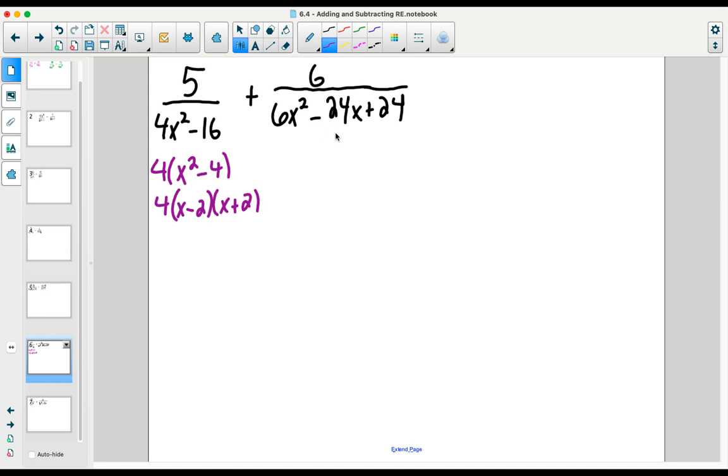In our second denominator, our trinomial denominator, we see a common factor of six. Once that six is removed as the common factor, that leaves behind a perfect square, further factoring that trinomial as x minus two times x minus two.